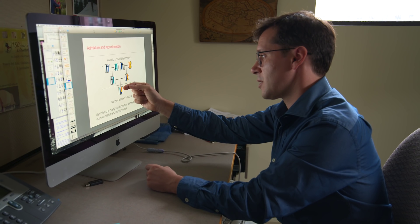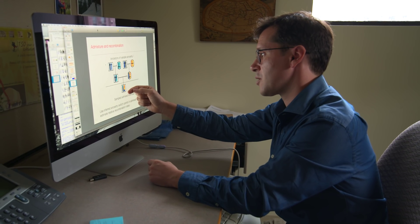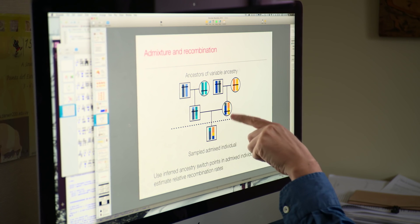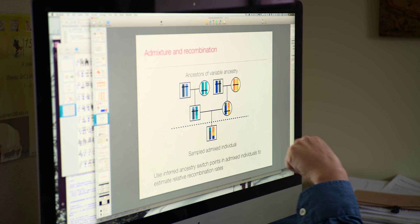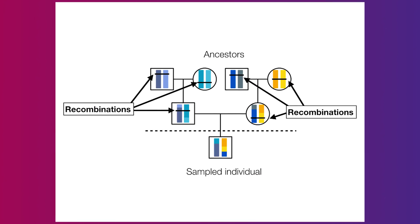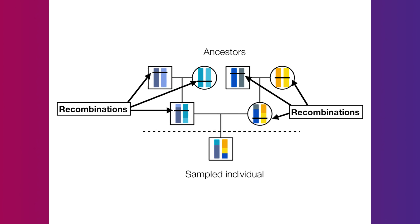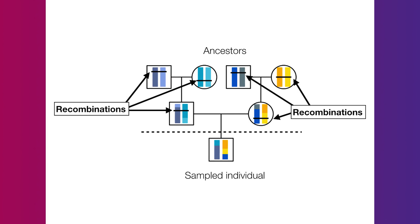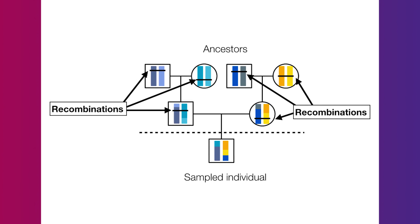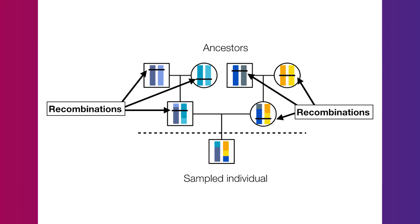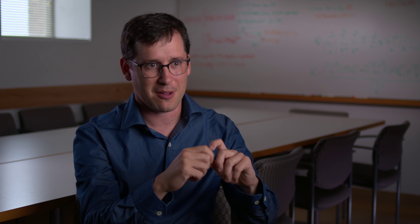If we can detect the switches from one ancestry to another, we can find a location where a recombination occurred in the past. Recombination is a fundamental process that takes place during reproduction where the DNA from two parents is taken and combined before being passed on to offspring. The rate of recombination refers to how, in different regions of the genome, the DNA from the two parents is stitched together in some places more often than in others.